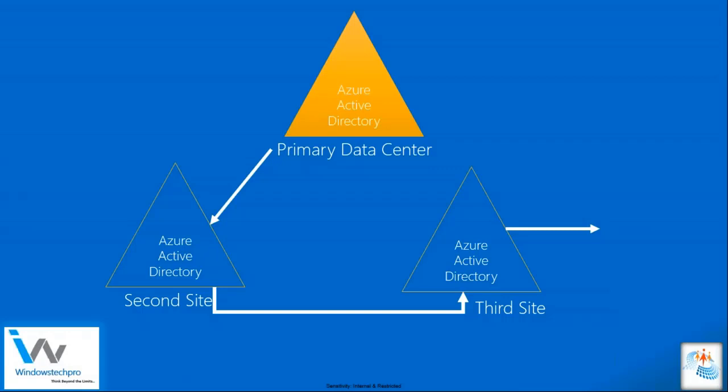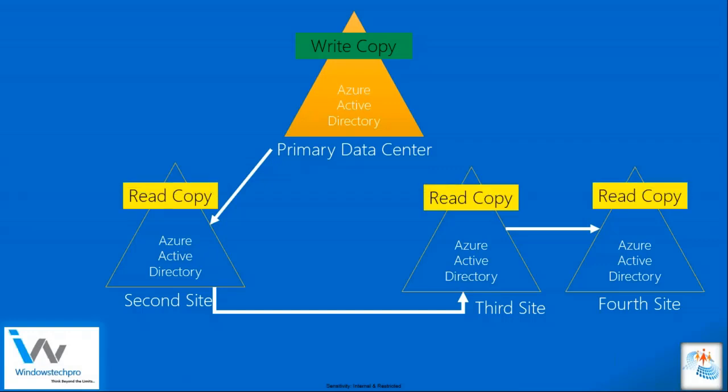The primary site is called the write copy — only one data center has write authority for your Active Directory. So if you want to create a user, the primary site keeps that write copy and that is where you can write. You enter data, it gets saved in your primary data center, and then that data gets replicated to the secondary and third data centers, which are called read copies.